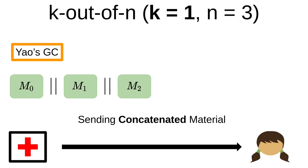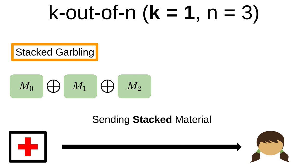Now that the generator has garbled all n circuits, he can concatenate them into a single string and send this string across the network to Alice — this would be the step in the standard Yao's garbled circuit approach. After receiving this material, Alice would simply retrieve the circuit encryptions she wants to take and evaluate them. In stack garbling, instead of sending M0, M1, and M2 separately, the generator adds these three values together using bitwise exclusive OR.